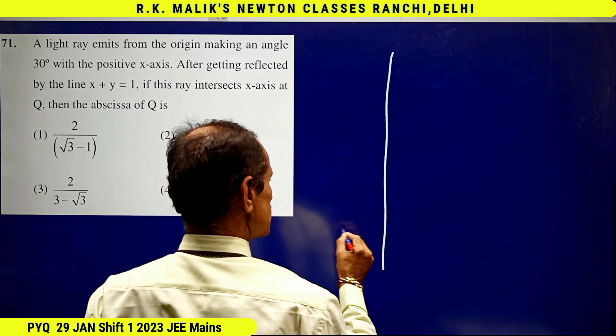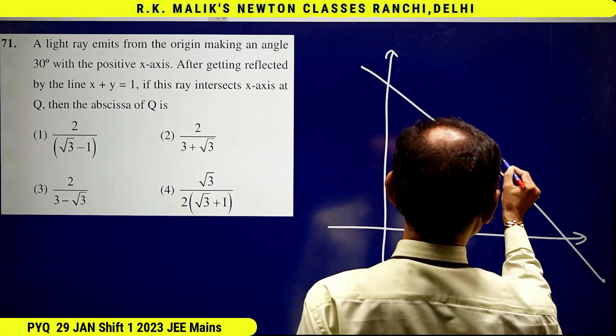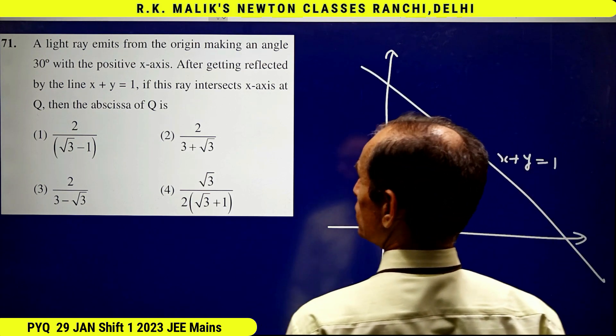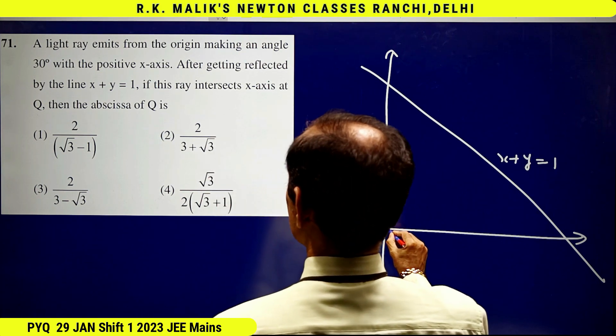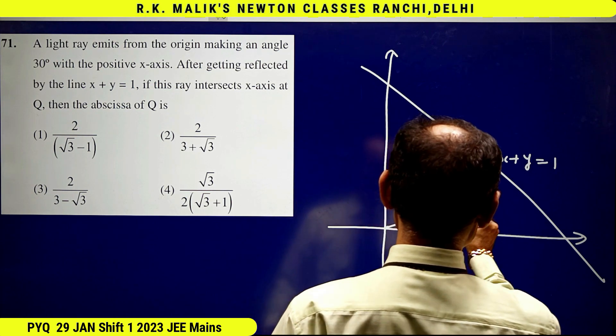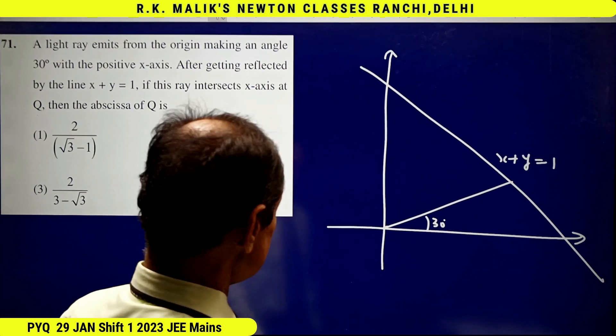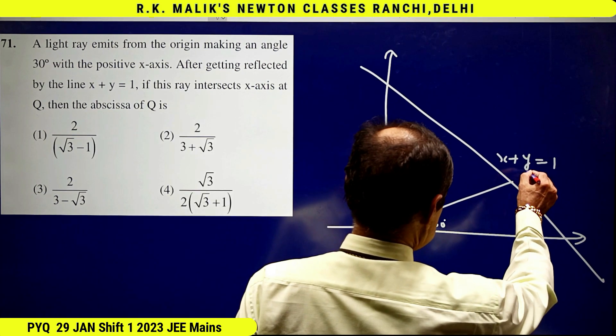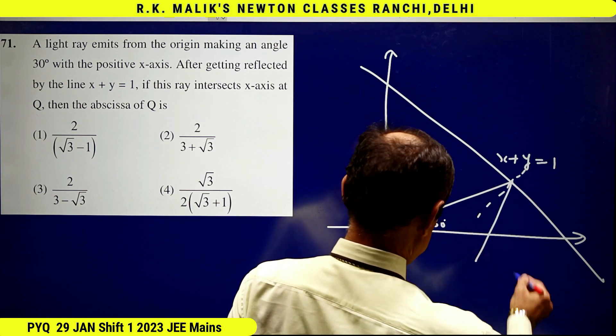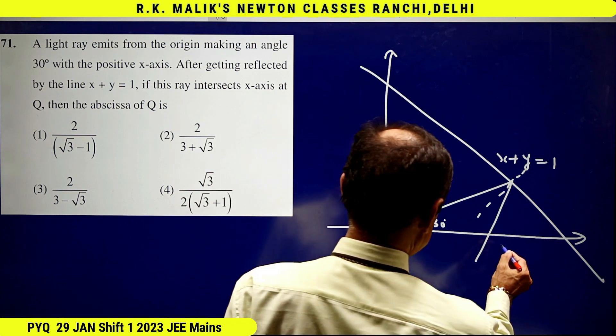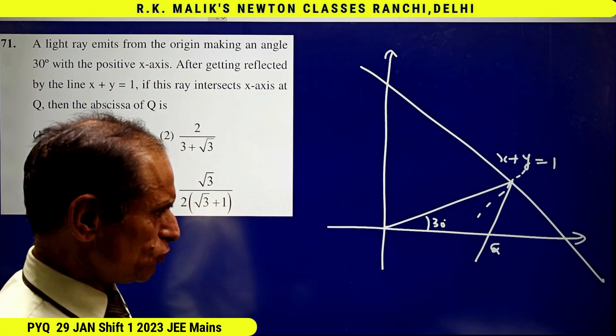According to this question, this is the x-axis and y-axis, and this is the line x + y = 1. A ray of light starts from the origin making an angle of 30 degrees with the positive direction of the x-axis. And if this is a normal, then the reflected ray will go back in this way and this is the point Q. You have to find the x-coordinate of point Q.